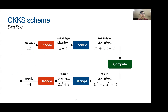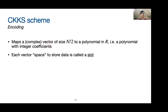This is the data flow for the CKKS scheme. We start off with a message, which is typically a number. The number is then encoded into a plaintext, which is a polynomial. When encrypted, it becomes a pair of polynomials. After homomorphic computation is performed, this process is reversed to obtain the result. For the CKKS scheme, the encoding process maps a vector of length n over 2 to a polynomial in R. We call each vector space used to store data a slot.